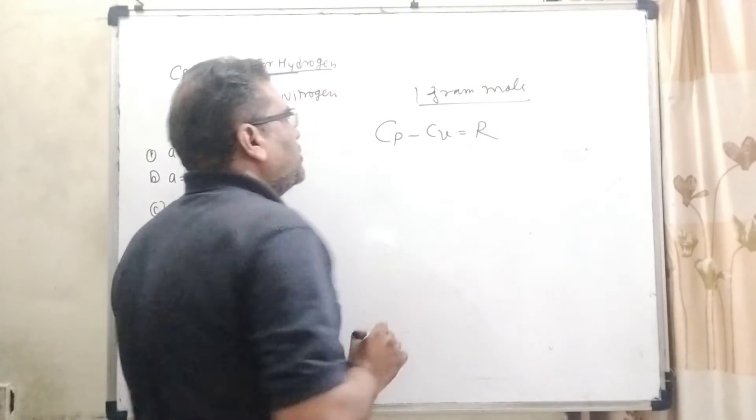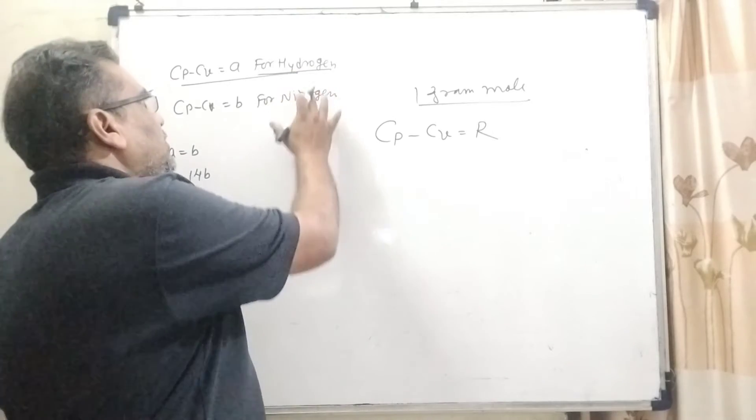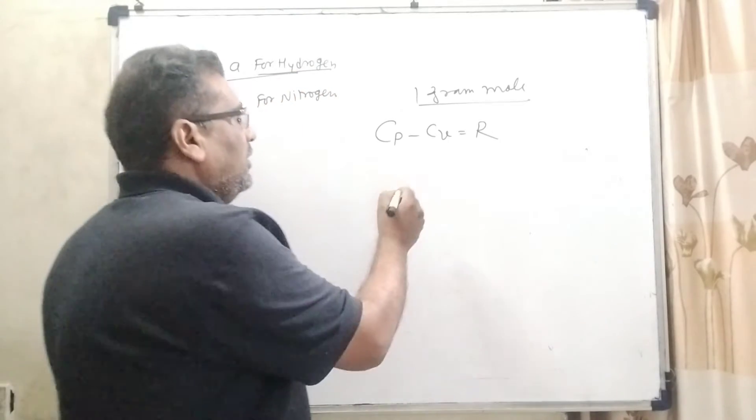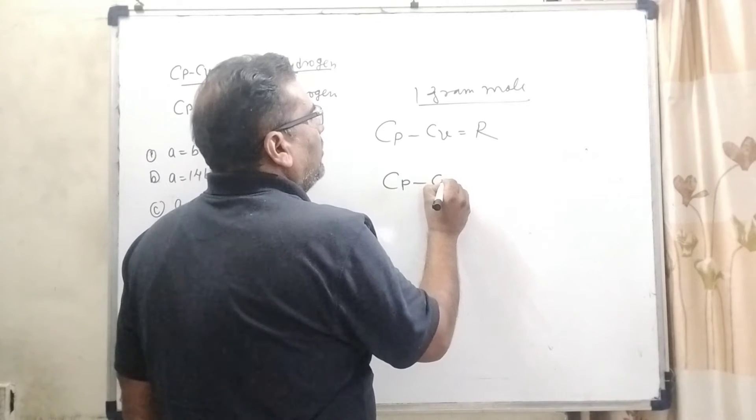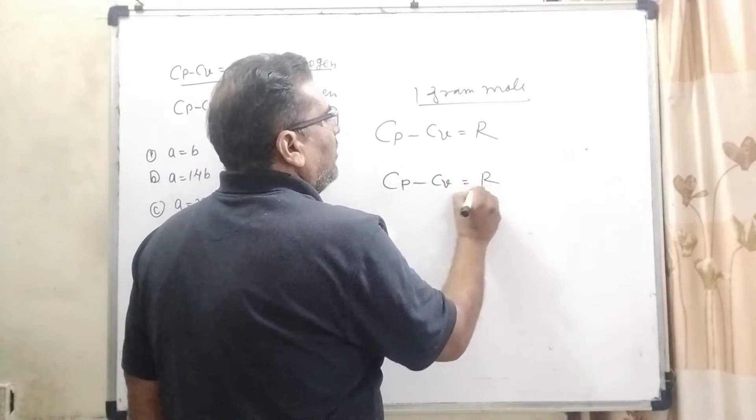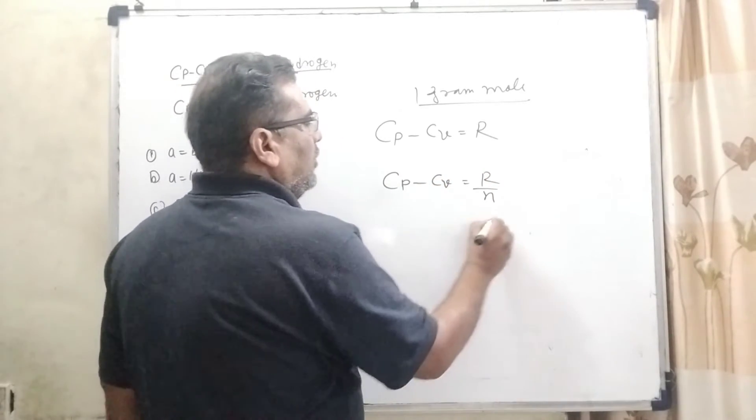But here in the question, we have given 2 gases, hydrogen and nitrogen. So therefore, for n gram mole, we have using the formula R by n.